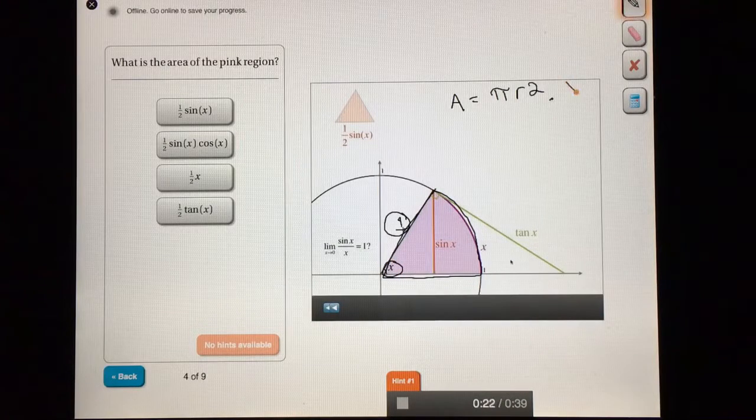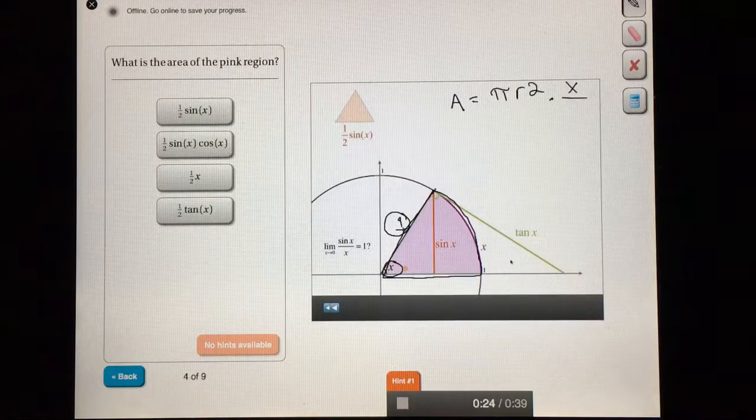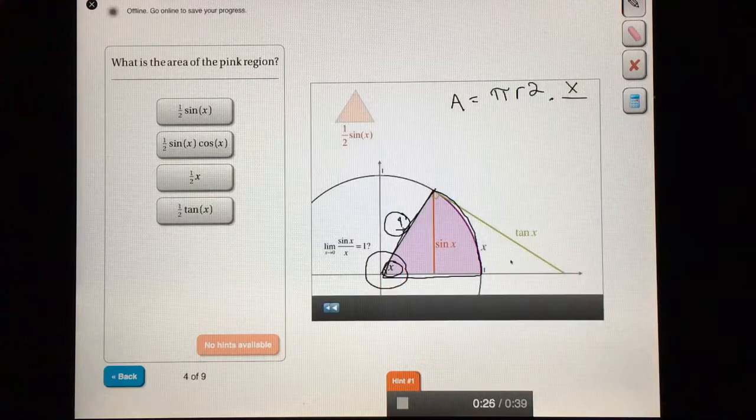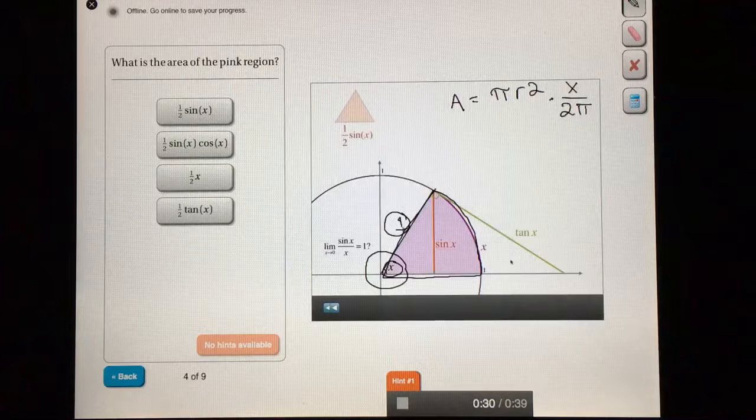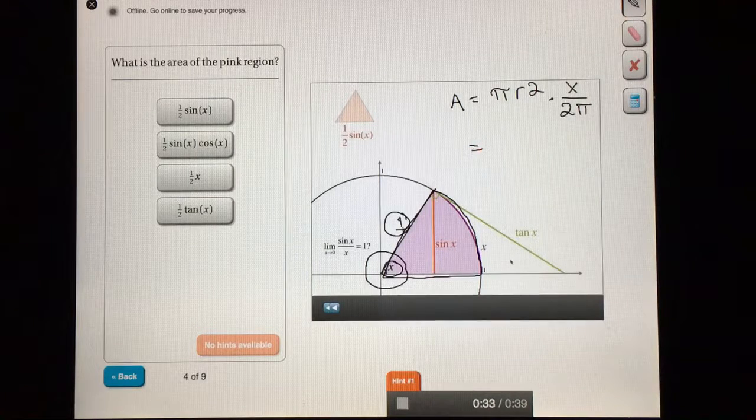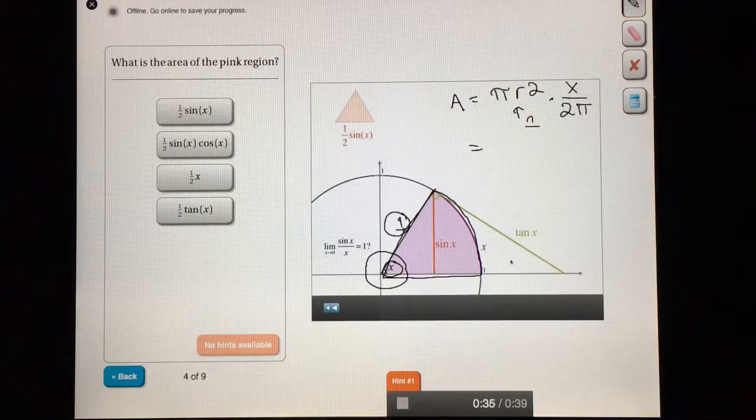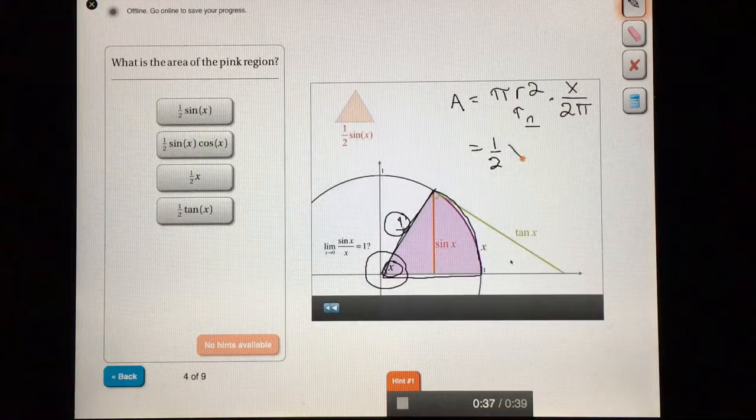Well, this angle's x, and the total amount of angle in a circle is 2 pi. So the amount that we want is x over 2 pi of a full circle. Again, remembering that the radius here is one, we're left with one-half x.